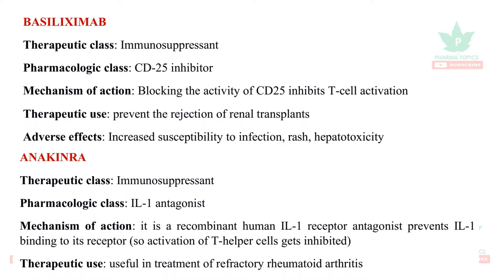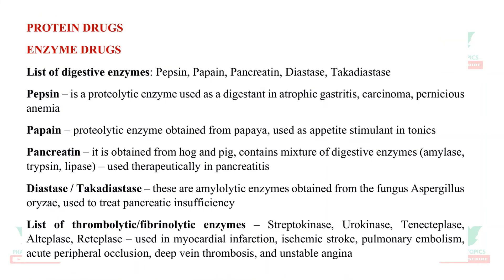Basiliximab is an immunosuppressant CD25 inhibitor that prevents rejection of renal transplants. Adverse effects include increased susceptibility to infections, rash, and hepatotoxicity. Anakinra is a recombinant human interleukin-1 receptor antagonist. It reduces activation of T-helper cells and is useful in treatment of refractory rheumatoid arthritis cases where no other drugs are working.